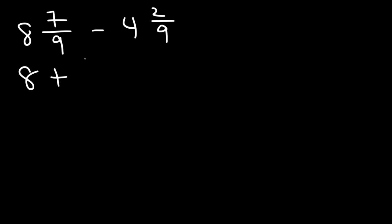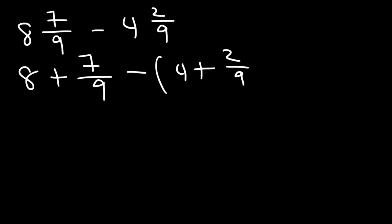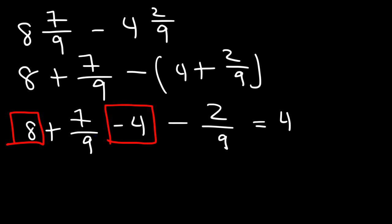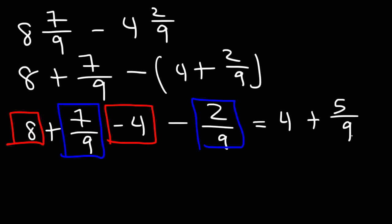This is 8 plus 7 over 9 minus 4 plus 2 over 9. If we distribute the negative sign we're going to have negative 4 and negative 2 over 9. So 8 minus 4 is equal to 4, and 7 over 9 minus 2 over 9 is 5 over 9. So the final answer is 4 and 5 ninths.